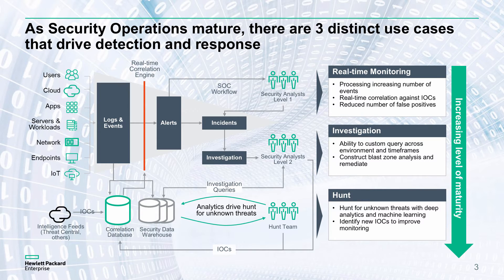Level one typically works on about a three to five minute initial triage of an alert to ascertain whether it needs further investigation or can be closed. Level two analysts pick up a determined threat or alert and follow it through from an investigation point of view, understanding the blast zone, what's impacted, and whether it needs to go into an incident management process. Finally, there's this additional layer of hunting for unknown threats, with information flowing both ways - from level two analysts to the hunt team and from the hunt team back to level two saying, 'we think we've found something, you run with that.'